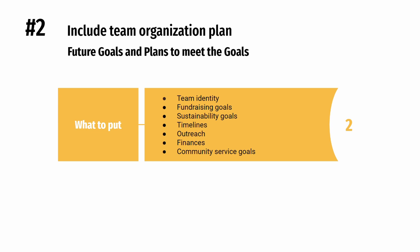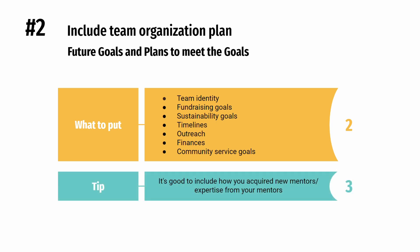Examples of what the plan should include are team identity, fundraising goals, sustainability goals, timelines, outreach to non-technical groups, finances, and community service goals. Also include how you acquire new mentors or how you acquire new knowledge and expertise from your mentors. In summary, your engineering portfolio should not only demonstrate a deep understanding of the robot design process, but also reflect your team's strategic planning and growth. By effectively showcasing both technical expertise and organizational goals, your portfolio will position your team as strong contenders for key FTC awards.